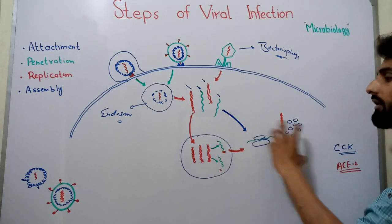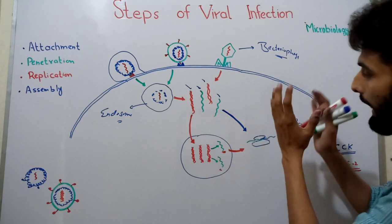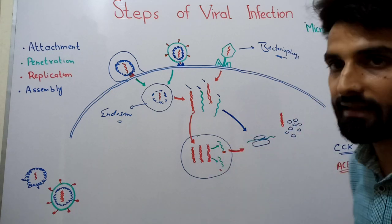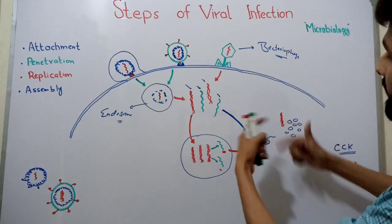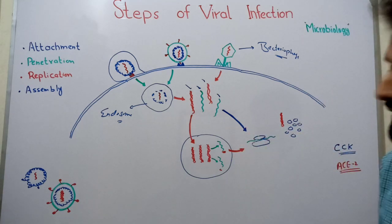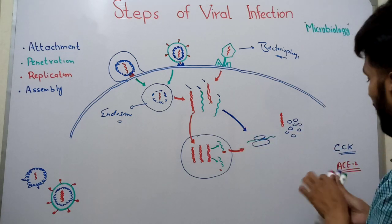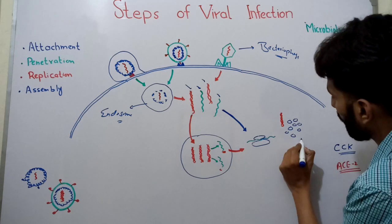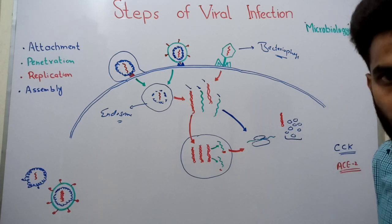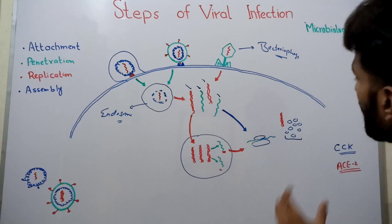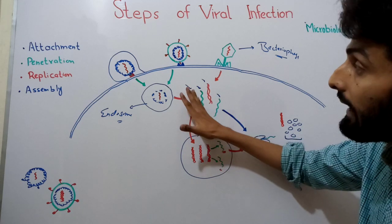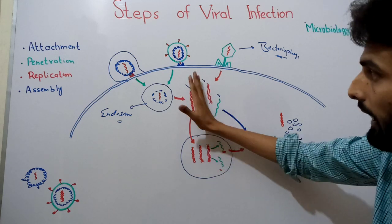The RNA produced in the nucleus exits through the nuclear pore and attaches to ribosomes in the cytoplasm. The process of translation then takes place, and different viral proteins are formed.